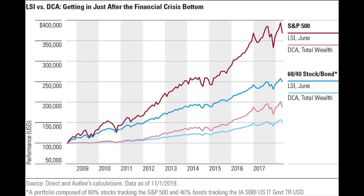What about right after a financial crisis? Let's say in 2009 you came into $100,000 and were scared from the financial crisis, worried about putting your money in all at once — so you decided to dollar cost average over the next 12 months. Morningstar also simulated this scenario, and the results showed that just putting your money into the market all at once as a lump sum, you would have been far better off than if you had decided to dollar cost average because you were worried about what the market might do.